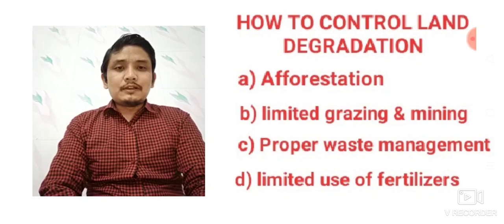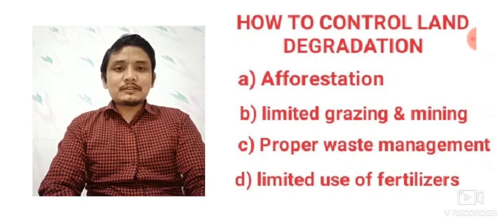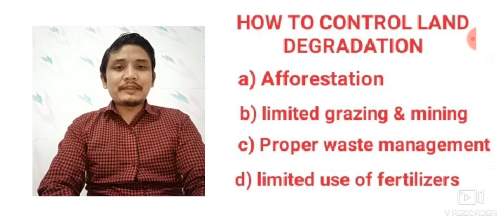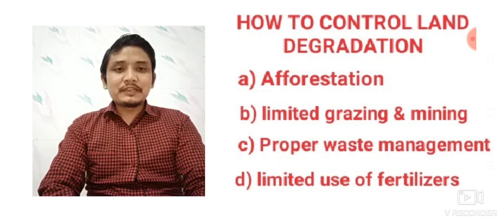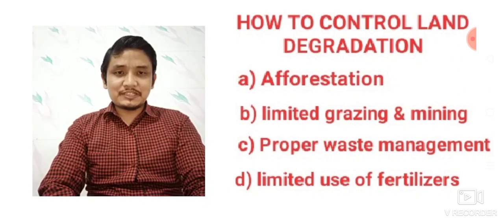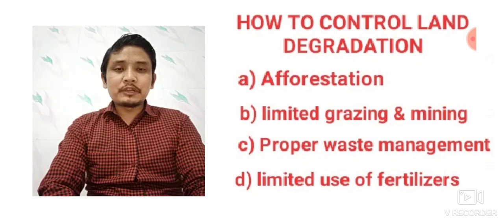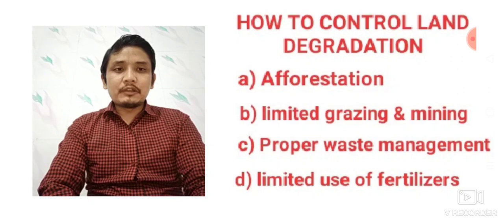Hello everyone. We have already discussed the causes of land degradation. Today I will discuss how to control land degradation. Number one: afforestation. Afforestation means growing more and more trees, and we can control land degradation this way. Number two: limited grazing and mining.